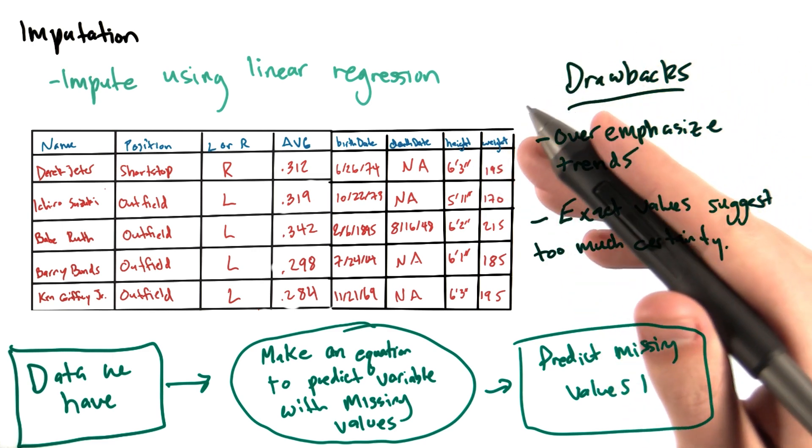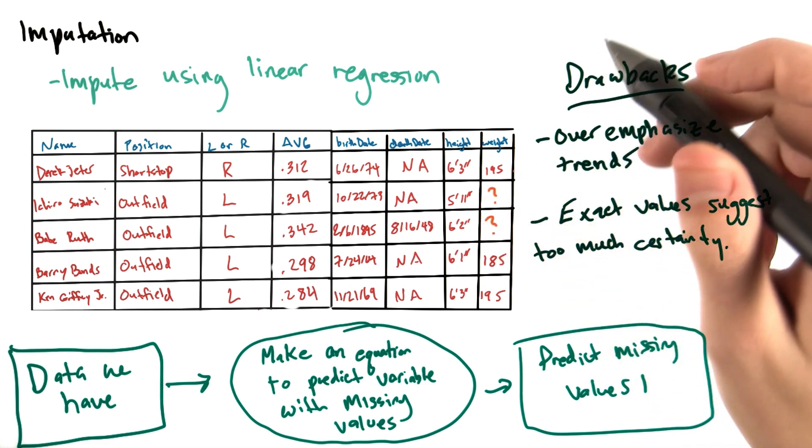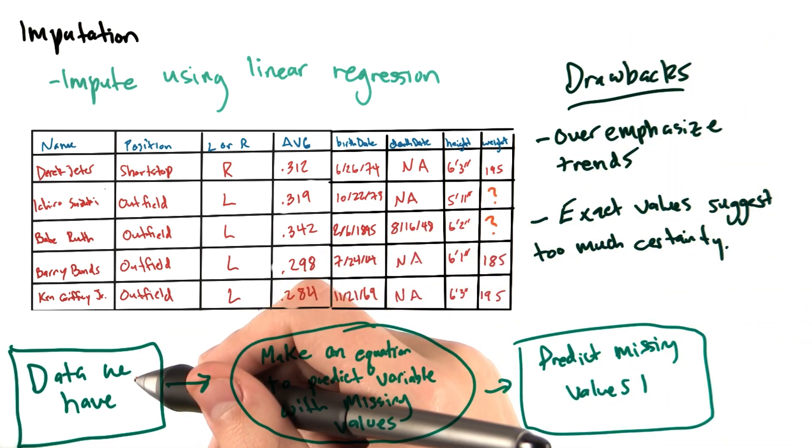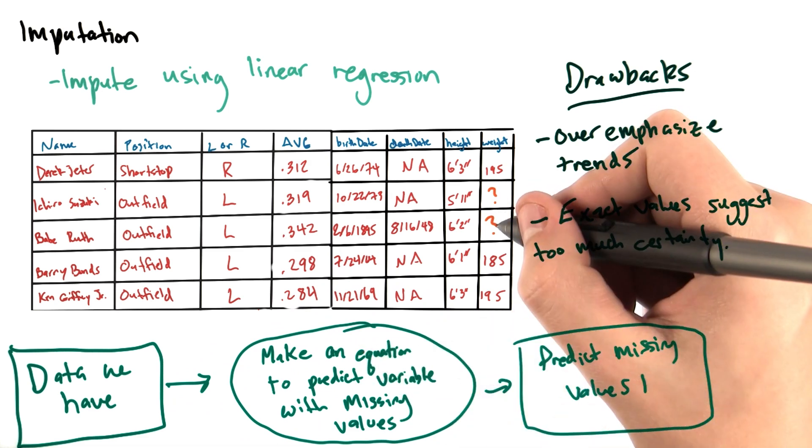In any case, let's say we did want to fill in the missing values for weight in our baseball player data. We could train a linear model using the existing data that we have and then use that model to fill in these missing values.